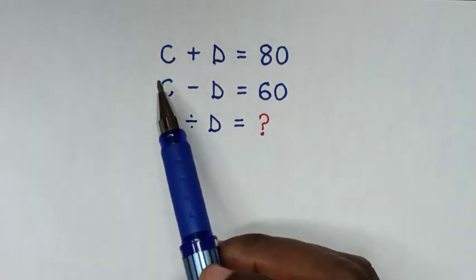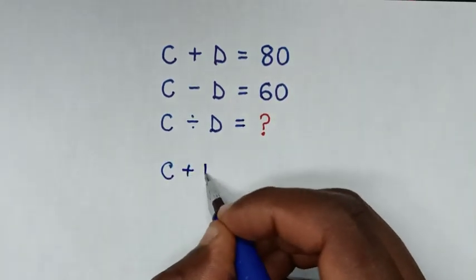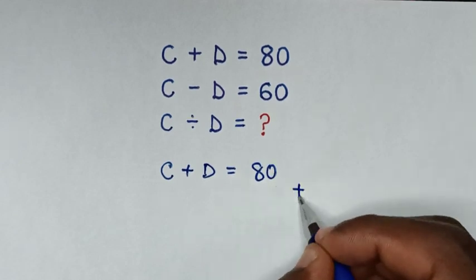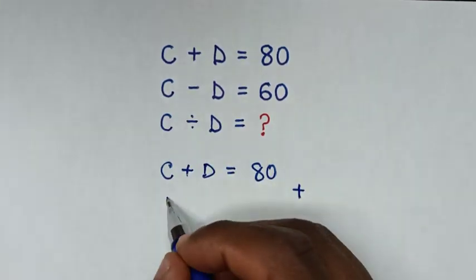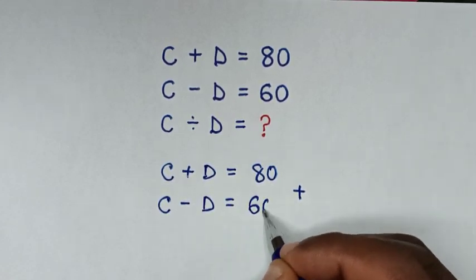in the first equation, which is C plus D equals 80, we add the second equation, which is C minus D equals 60.